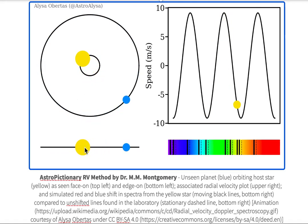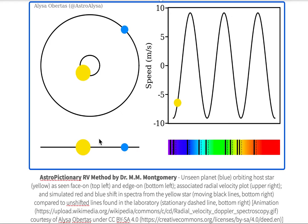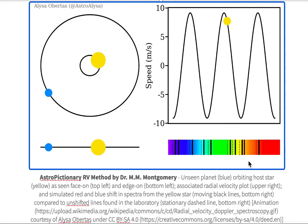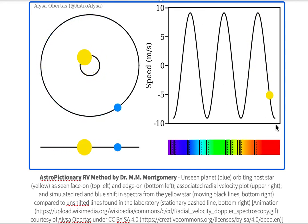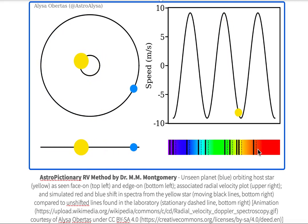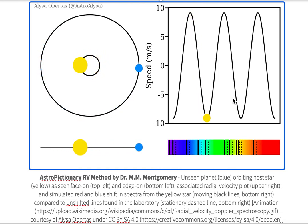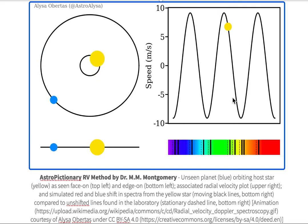In the edge-on case, the star is going away from us, then towards us, then away, then towards us — and that's how we get this plot. If you've got an edge-on system, you're able to get the spectra and the change in wavelength compared to the background wavelength to determine the speed of the star. With a face-on system, all the dark lines will sit on top of the dashed lines — no shift — and you cannot get the radial velocity plot at all. The radial velocity method is the velocity of the star towards or away from us, hence the word radial.